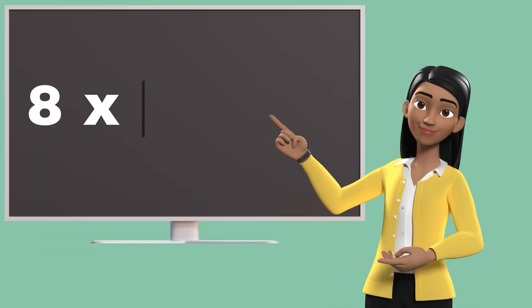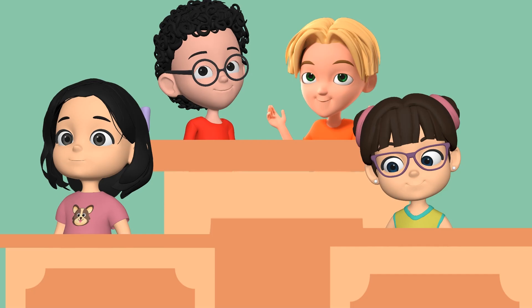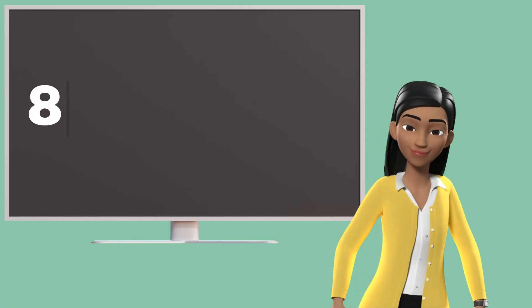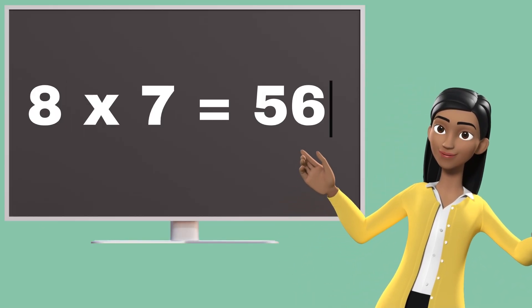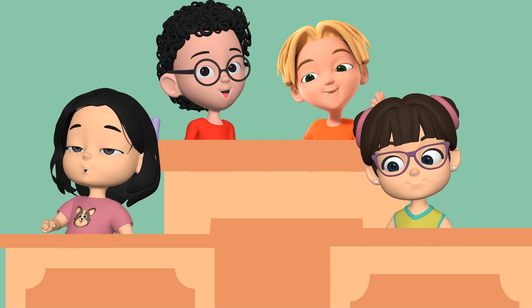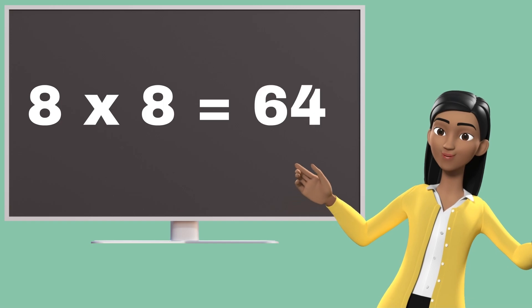Eight sixes are forty-eight. Eight sixes are forty-eight. Eight sevens are fifty-six. Eight sevens are fifty-six. Eight eights are sixty-four.